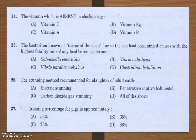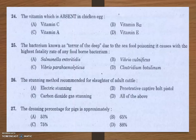Next question: the bacterium known as 'terror of the deep' due to the seafood poisoning it causes, with the highest fatality rate of any foodborne bacteria. The options are Salmonella Enteridis, Vibrio vulnificus, Vibrio parahaemolyticus, and Clostridium botulinum. The answer is Vibrio vulnificus.